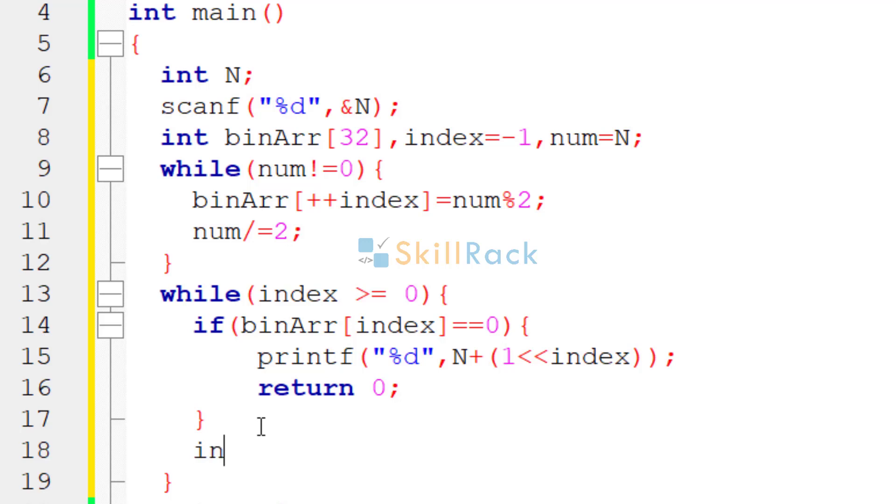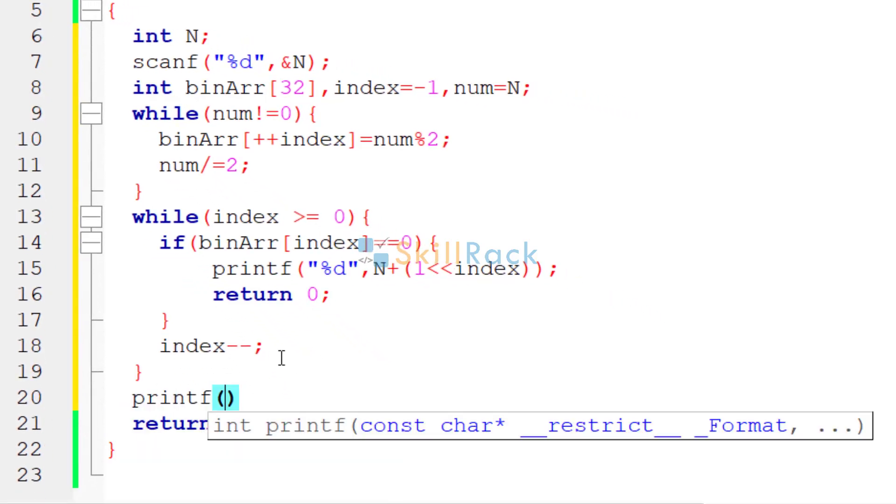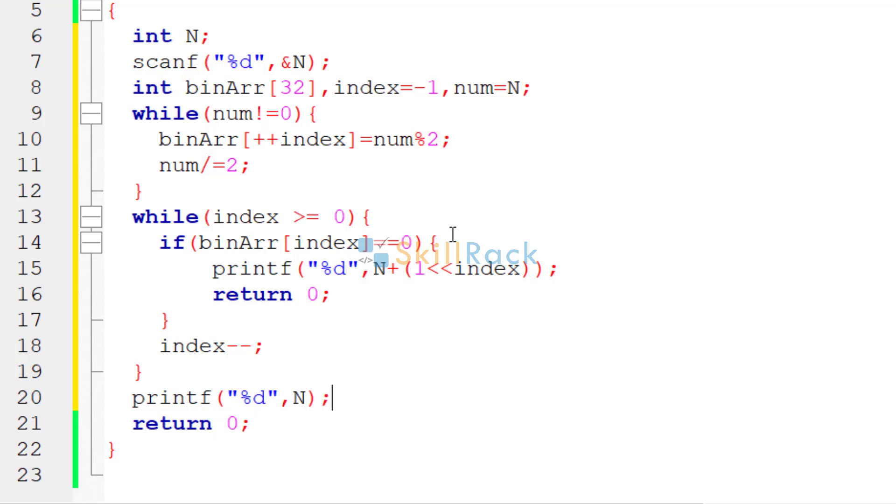Then you must also decrease the index values because if it is 0 it will print and return, but if the bit value is 1 then it should continue searching earlier. So we say index minus minus. If none of the bits are 0 then we come here after the while loop because the return does not happen. This will happen for values like 7, 15, 31 where it is 2 power x minus 1. So here what should you do? It is simple. We just print the value of n as such because there is no 0 bit to be toggled. So our implementation is complete.